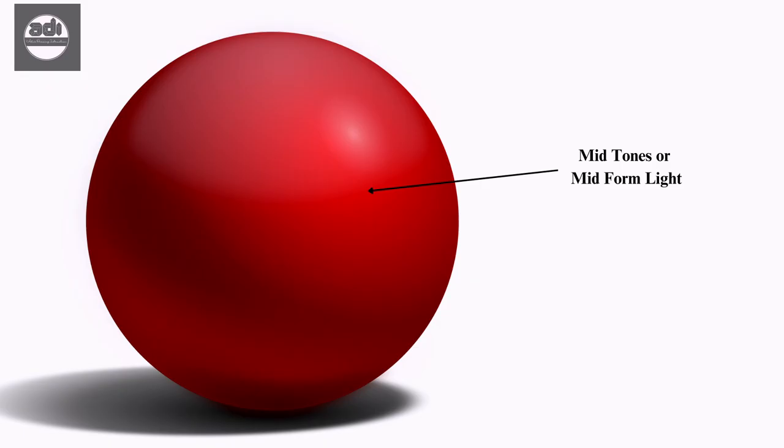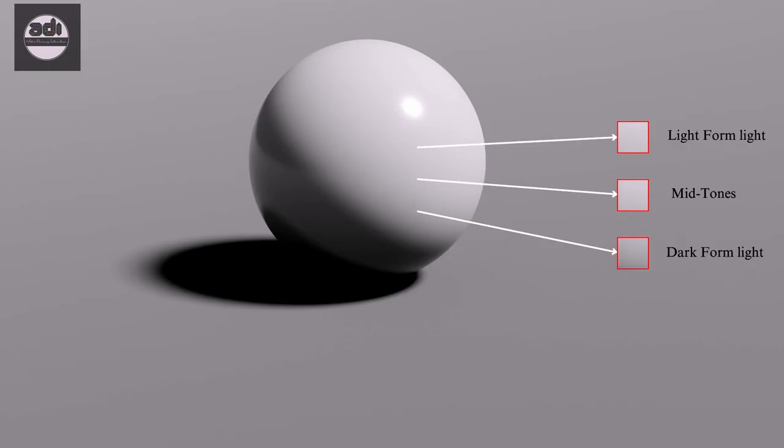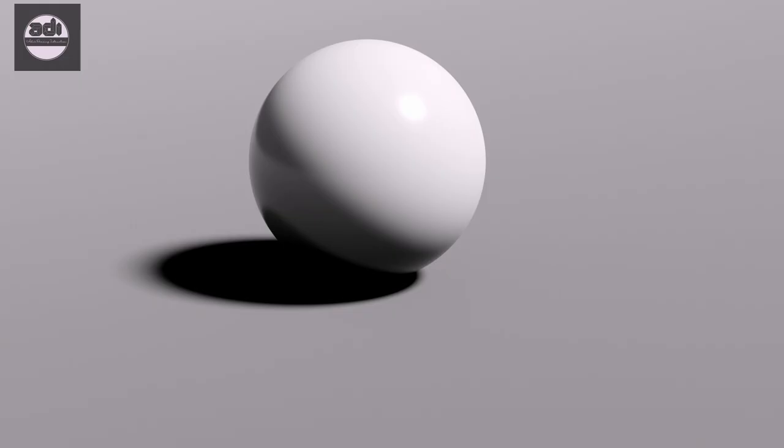Mid tones in drawing are those values that fall in between light values and shadow values. They are darker than the light form light and lighter than the dark form light. Mid tones come under the light family as they receive direct light. They are brighter than everything in the shadow family.